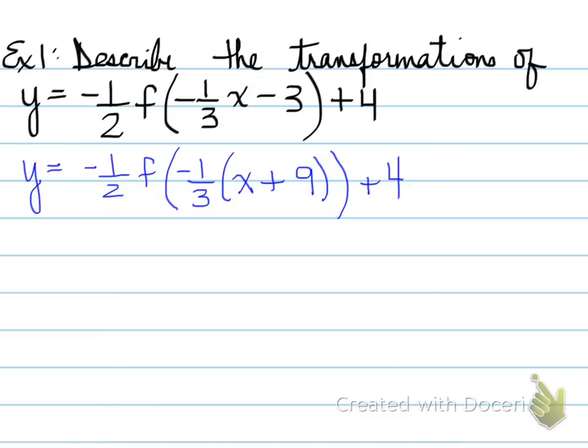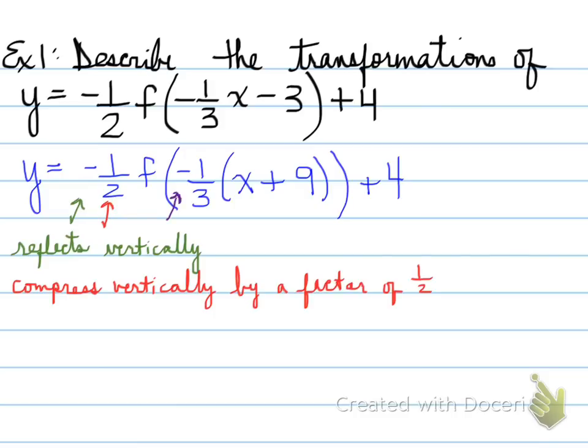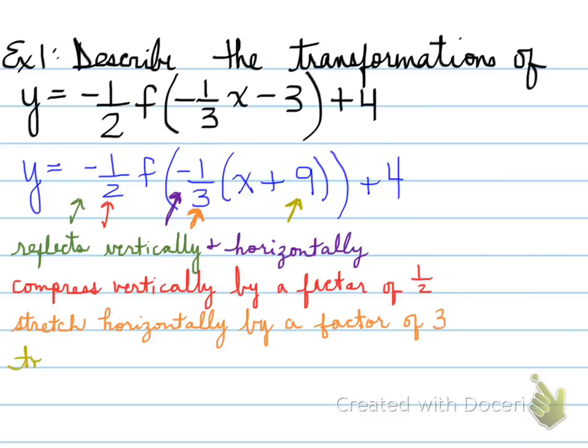So what you're supposed to do is describe each and every single piece. The negative after the equal sign implies that there is a reflection vertically. The half right next to the negative before the f implies that there is a compression vertically by a factor of 1/2. Next is the negative on the inside. The negative on the inside means that there is a reflection horizontally. And the 1/3 that's found in here implies that there is a stretch horizontally by a factor of 3.